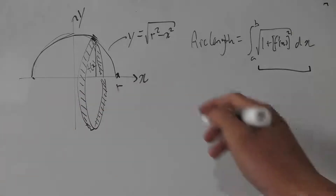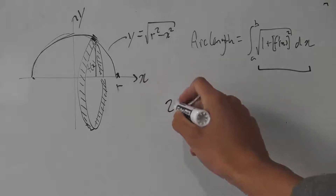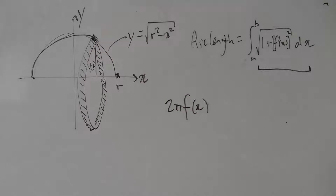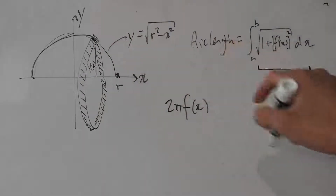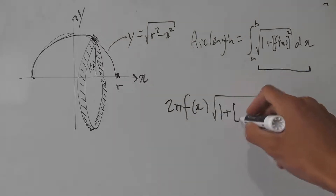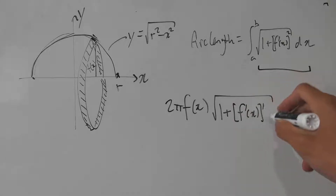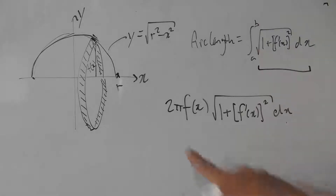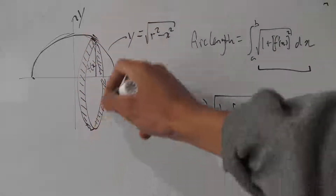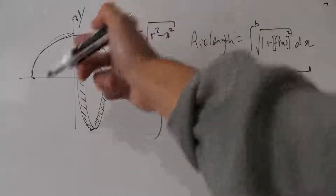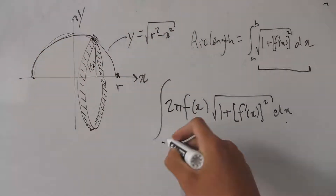So let's write things down. We need 2π times f of x, which gives us the circumference. We multiply that by the little change in arc length: the square root of 1 plus f prime of x squared, times dx. This is our expression for each of these little slivers, and now we can just place an integral sign in front.